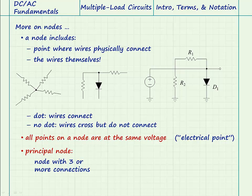A principal node is a node that connects three or more components. In this circuit, the nodes labeled A and B are principal nodes. Notice that the nodes labeled C, D, E, and F each connect only two elements together. These nodes are not principal nodes.